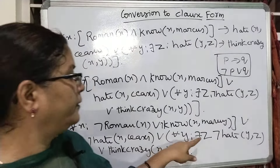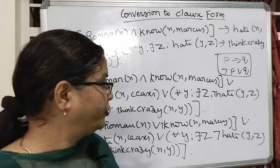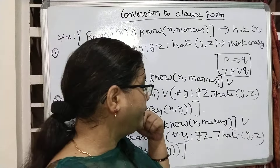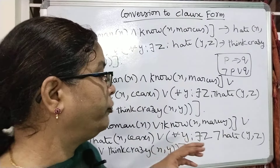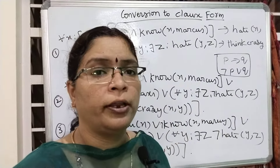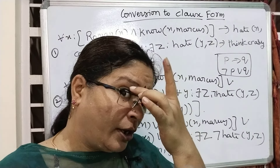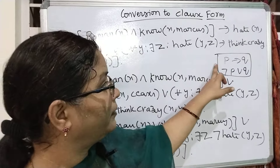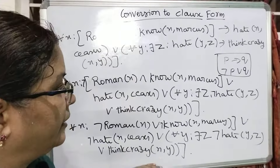We have applied in the third step: negation is applicable to the whole expression. Now in the fourth step, we need to drop some of the universal quantifiers. The first step is conversion of p implies q into the horn form, and we have converted the entire thing accordingly.